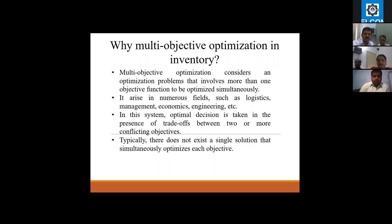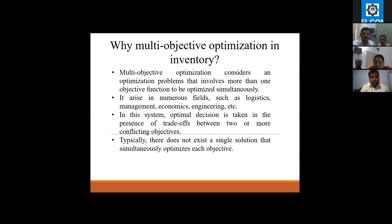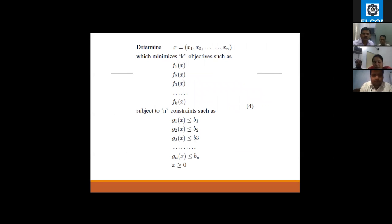Multi-objective optimization in inventory problems considers an optimization problem involving more than one objective function to be optimized simultaneously. It arises in fields such as logistics management, economics, and engineering. The optimal decision is taken in the presence of trade-offs between two or more conflicting objectives. This formula determines the inventory problems using constants x1 to xn and functions f1 to fk.